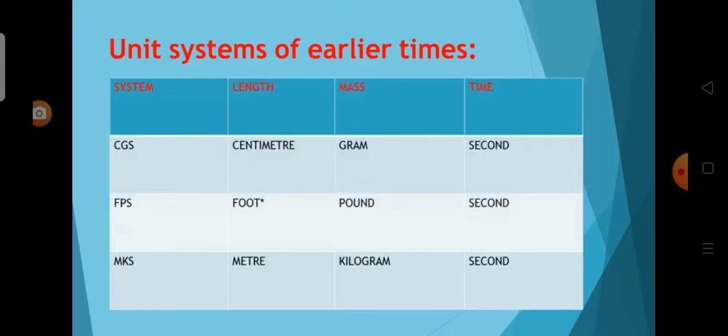Now we see about the unit systems of earlier times. In earlier times, some systems were used: CGS, FPS, and MKS. CGS means centimetre, gram and second. FPS means foot, pound, second. MKS means metre, kilogram and second. At the end of the Second World War, there was a necessity to use a worldwide system of measurement. So, the SI system — international system of units — was developed and recommended by the General Conference on Weights and Measures at Paris in 1960 for international usage.